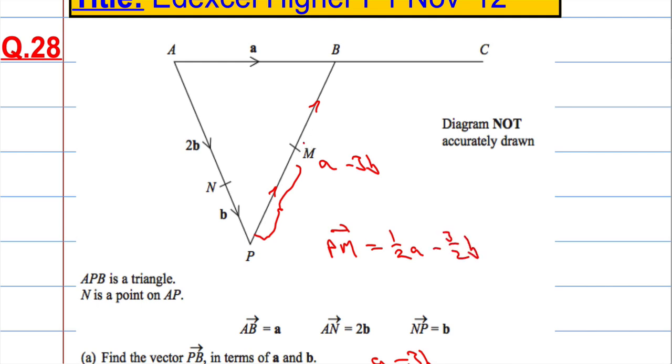And the vector, here we go again with another shocking curly bracket. Let's try it again. Much better. However, this must also be a half a minus 3 over 2b.